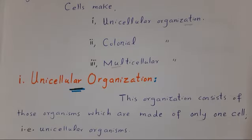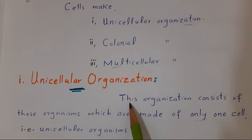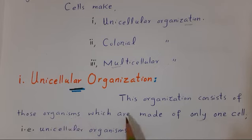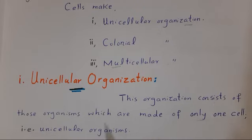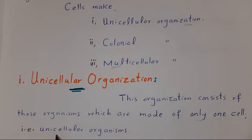The first one is unicellular organization. 'Uni' means one or single. Unicellular organization consists of those organisms which are made up of only one or single cell. In unicellular organization, only one cell makes the bodies of living organisms — these are called unicellular organisms.